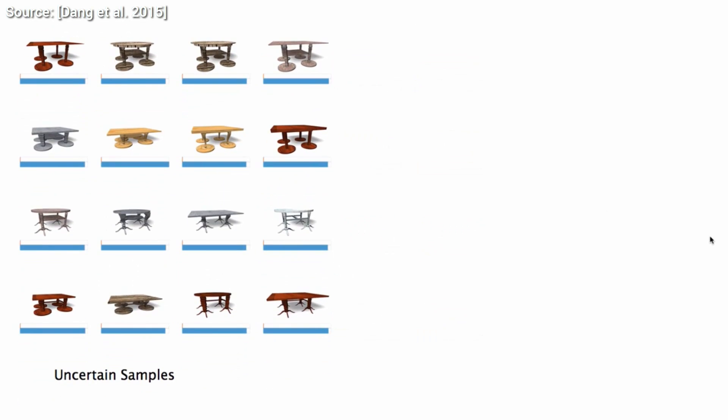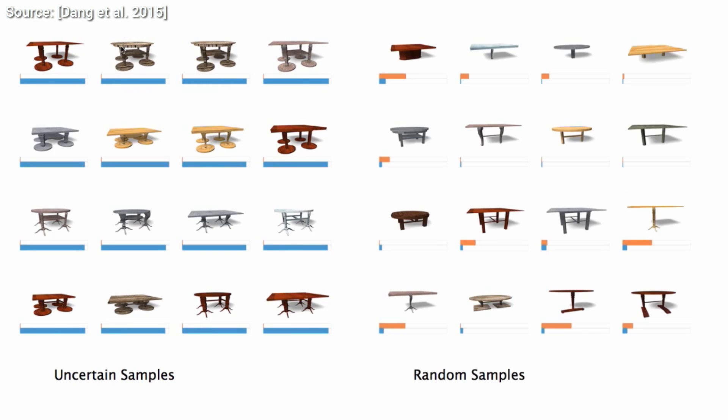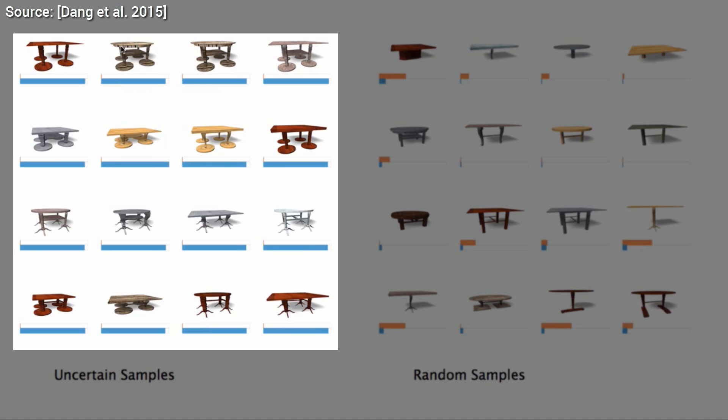Interestingly, since we have these uncertainty values, one can also visualize contrary examples where the algorithm is not so sure, but would guess that we wouldn't like the model. It's super cool that it is aware how horrendous these designs look. It may have a better eye than many of the contemporary art curators out there.